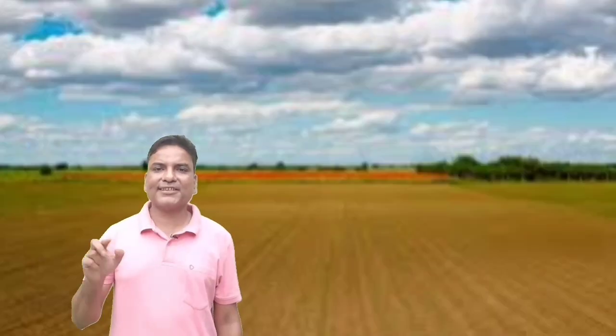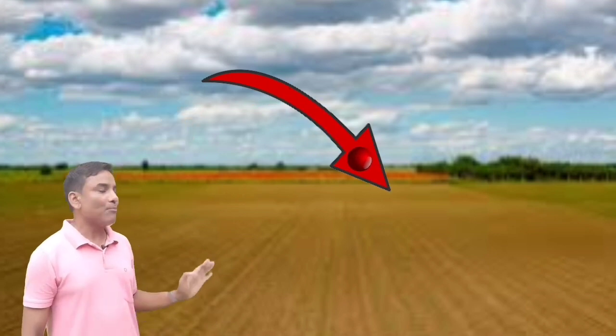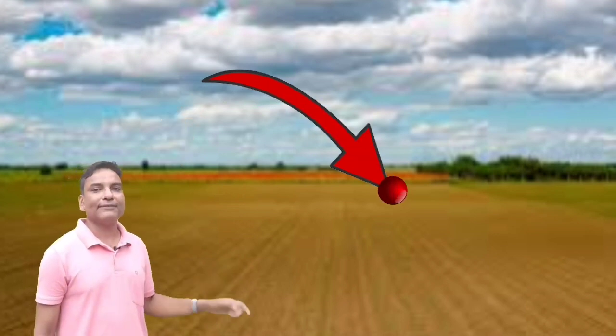Actually, we cannot explain this incident in a single sentence. To understand the incident, let's do a thought experiment. Let's say I have a ball. If I release the ball, then the ball will fall on the ground. Now, if I throw the ball horizontally, then the ball will fall down like this in a curved path.